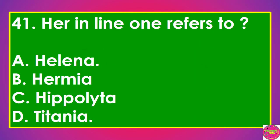Question 41: 'Her' in line 1 refers to: A. Helena, B. Hermia, C. Hippolyta, D. Titania. The correct answer to this question is B. Hermia.